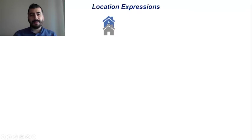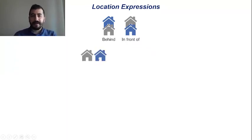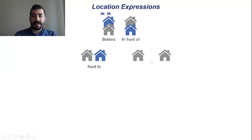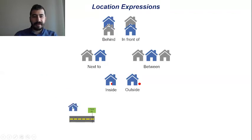Now, some location expressions. Let's remember. The blue house is behind. Let's see the next one — the blue house is in front of. Very good. Where is the blue house now? Next to. Where is the blue house? It is between. We have a first street here — on the street, on First Street. We use ON.